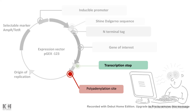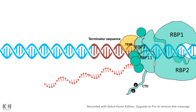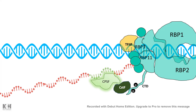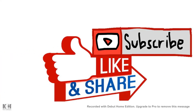Two other important sites are the transcription stop site and the polyadenylation site. The transcription stop site allows transcription to halt in a rho-dependent or independent manner. For eukaryotes especially, polyadenylation is critical — enzymes like CPSF and CSTF trigger polyadenylation, and without it the mRNA is unstable and gets degraded, meaning the protein won't be expressed. All these factors matter when choosing an expression vector for your experiment.